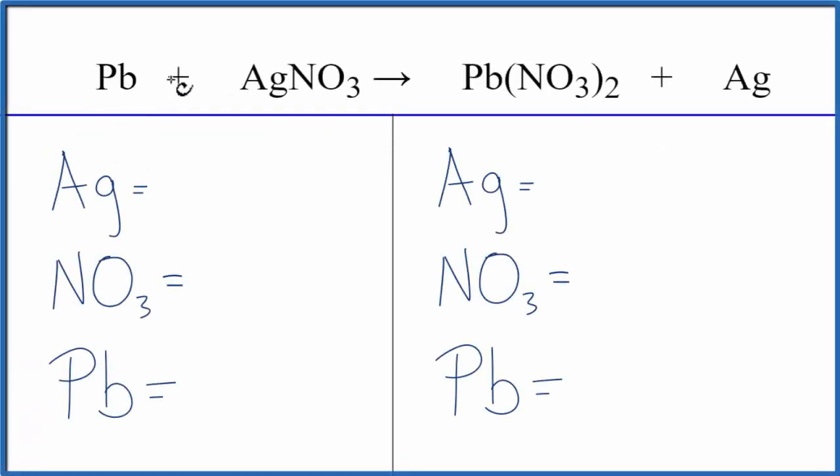In this video, we'll balance the equation lead metal plus silver nitrate yields lead 2 nitrate plus silver metal. This is a single displacement reaction.